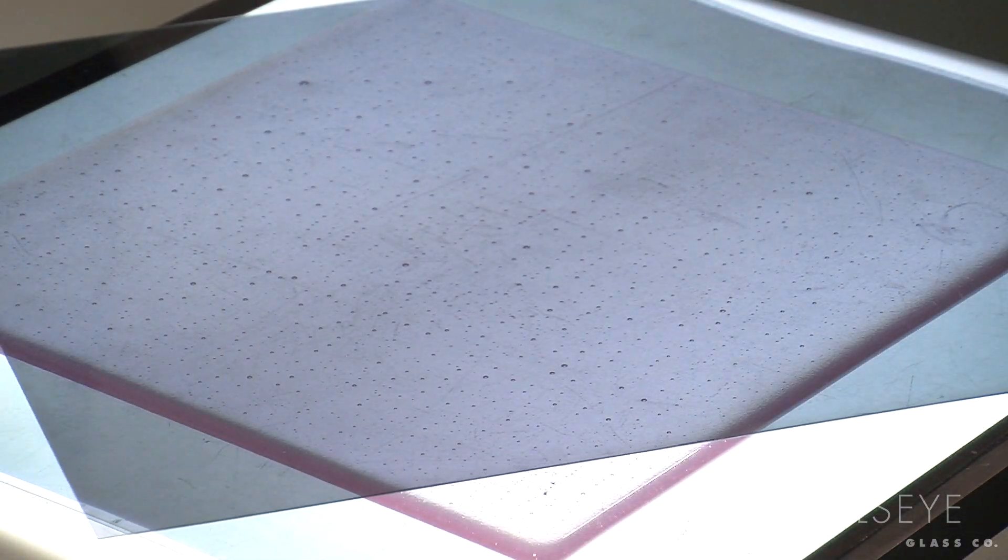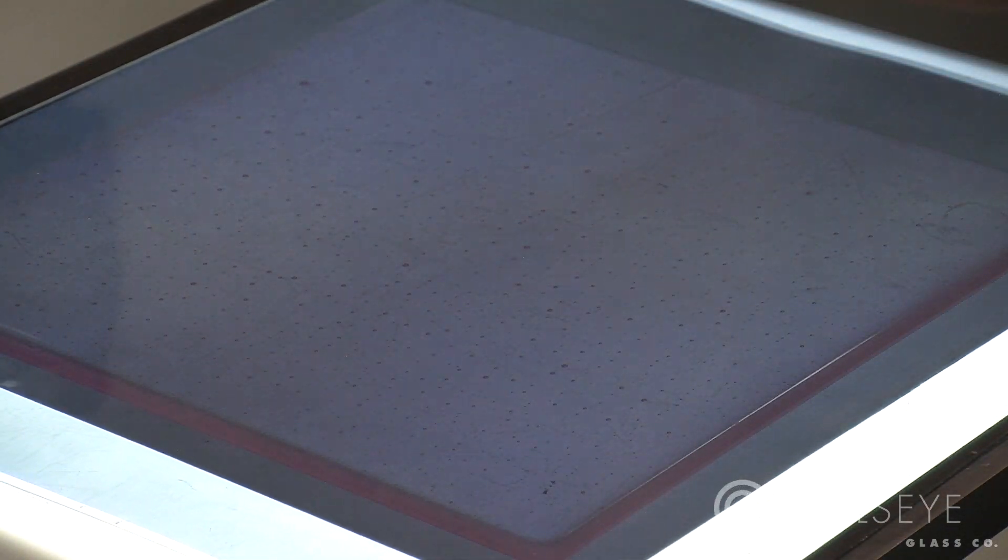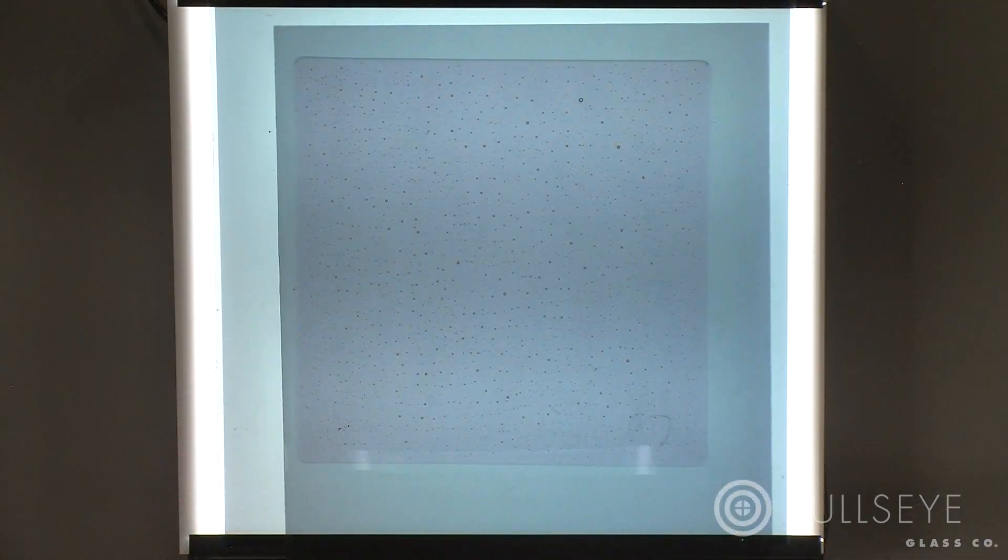To remove this strain, re-fire the piece above 1000 degrees Fahrenheit, then properly anneal and cool according to its calculated thickness.